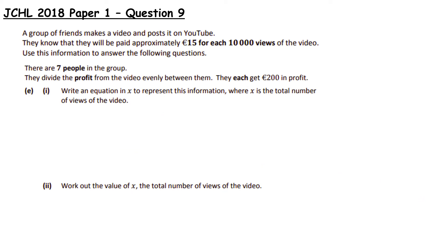Now there are seven people in the group. They divide the profit from the video evenly between them and they each get €200 in profit. Write an equation in X to represent this information where X is the total number of views. So we've just worked out 0.0015X minus 70. And when this was split or divided seven ways, everyone got 200. Now that is the equation itself.